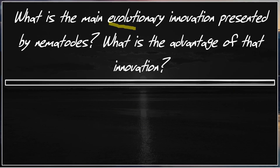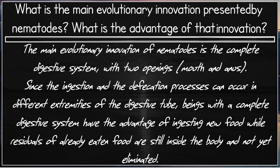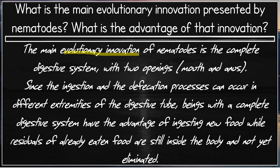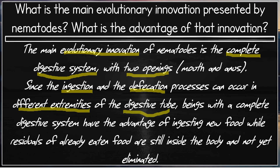What is the main evolutionary innovation presented by Nematodes? What is the advantage of that innovation? The main evolutionary innovation of Nematodes is the complete digestive system with two openings: the mouth and the anus. Since ingestion and defecation occur at different extremities of the digestive tube, animals with a complete digestive system have the advantage of ingesting new food while previously eaten food is still inside the body and not yet eliminated.